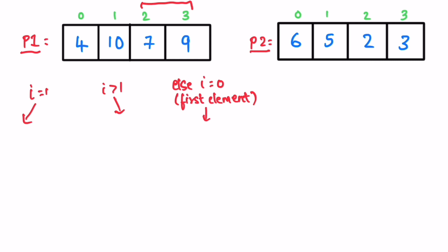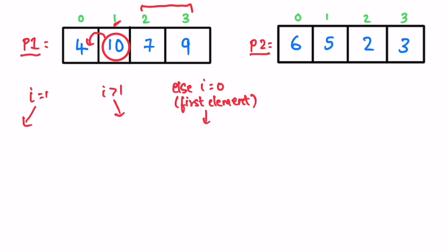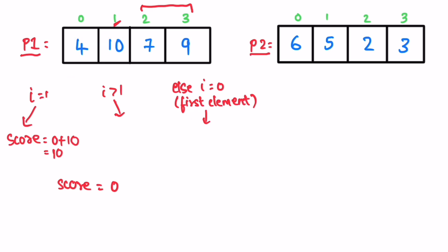Starting with i equal to 1 (the second element): we check only one element to its left. We declare a variable 'score' initialized to zero. If the previous element is not 10, we don't double the score — we add the current value as-is. If it were a 10, we'd double it and add 20, but since it is 4 in this example, the normal value is added.